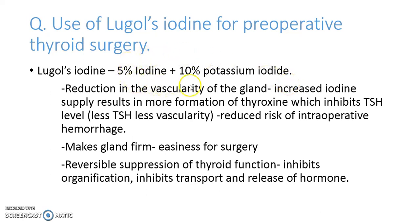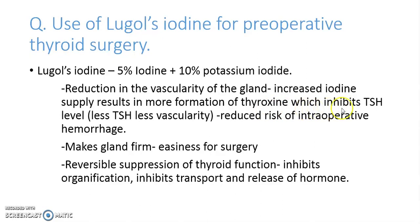Lugol's iodine helps in three ways. The first is reduction of thyroid stimulating hormone (TSH), and because of this reduction there is decreased vascularity of the gland. TSH is responsible for maintaining the vascularity of the gland, so any inhibition of TSH causes reduced vascularity. This inhibition occurs because giving Lugol's iodine increases availability of iodide, resulting in more formation of thyroxine, which causes negative feedback inhibition and decreased TSH levels.